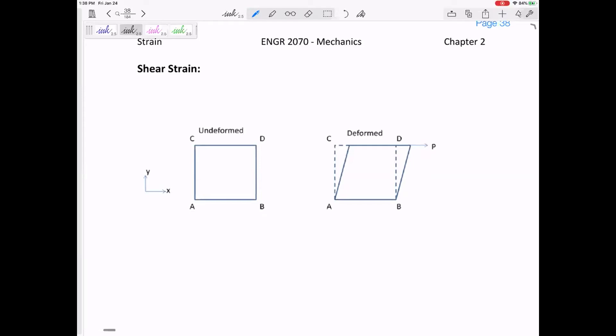So shear strain is gamma. Shear strain is gamma, and this is a measure of a change in shape here, but what we're really going to say is we're going to say a change in angle. So a measure of a change in angle that occurs between two line segments that were originally perpendicular.